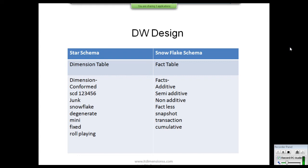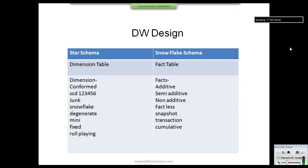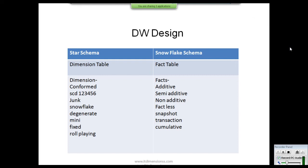The main classification types of dimension tables are: conformed dimension, junk dimension, snowflake dimension, degenerative dimension, very large dimension, mini, fixed, and role-playing dimension. One important type found in most data warehouses is the slowly changing dimension, or SCD, which is classified into six categories.